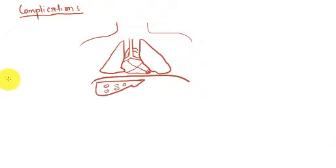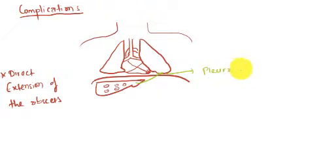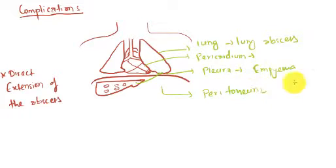Talking about the complications, there is direct extension of the abscess from the liver. It can go to the pleura causing empyema, it can go to the pericardium, it can go to the lung causing lung abscesses, and it can go to the peritoneum causing peritonitis.